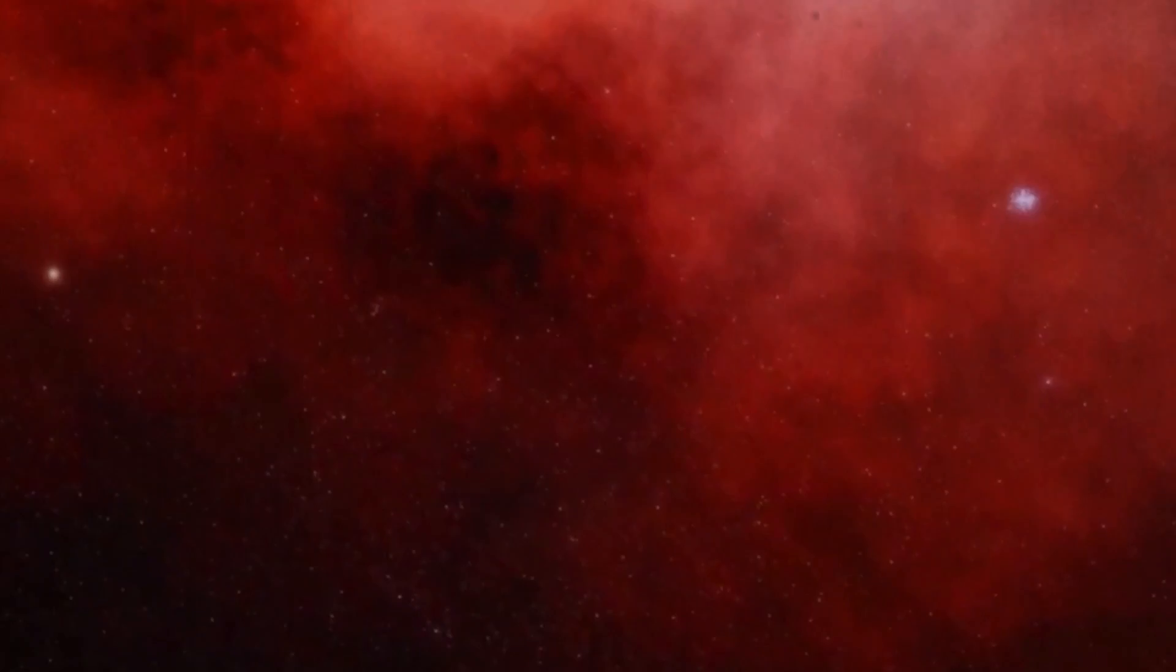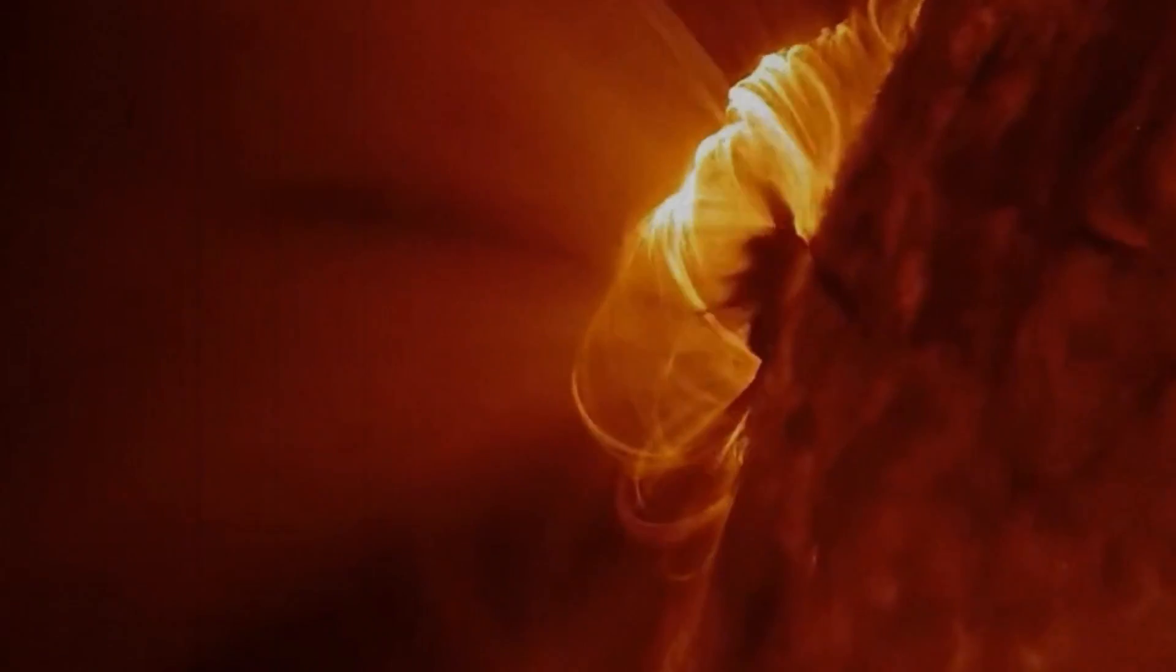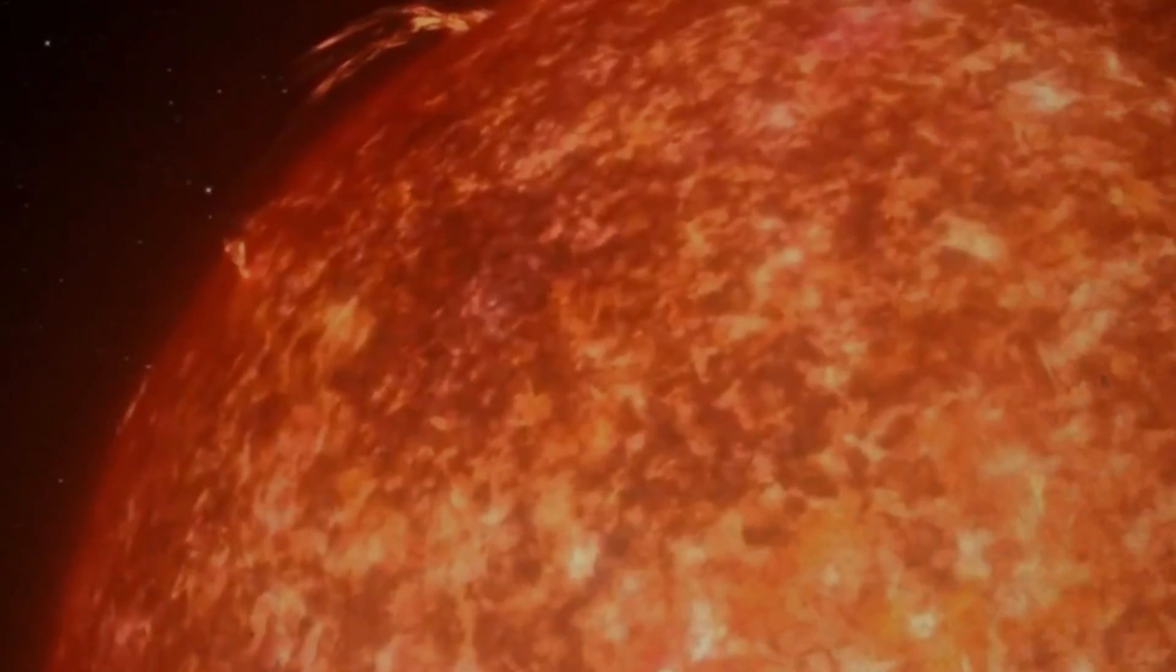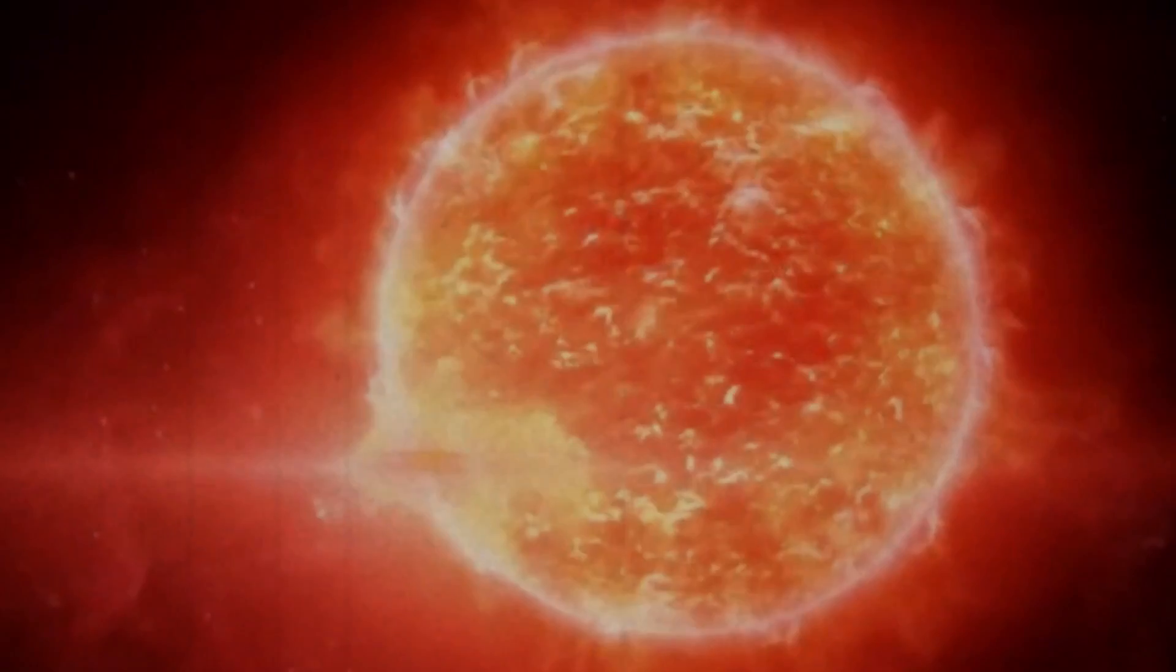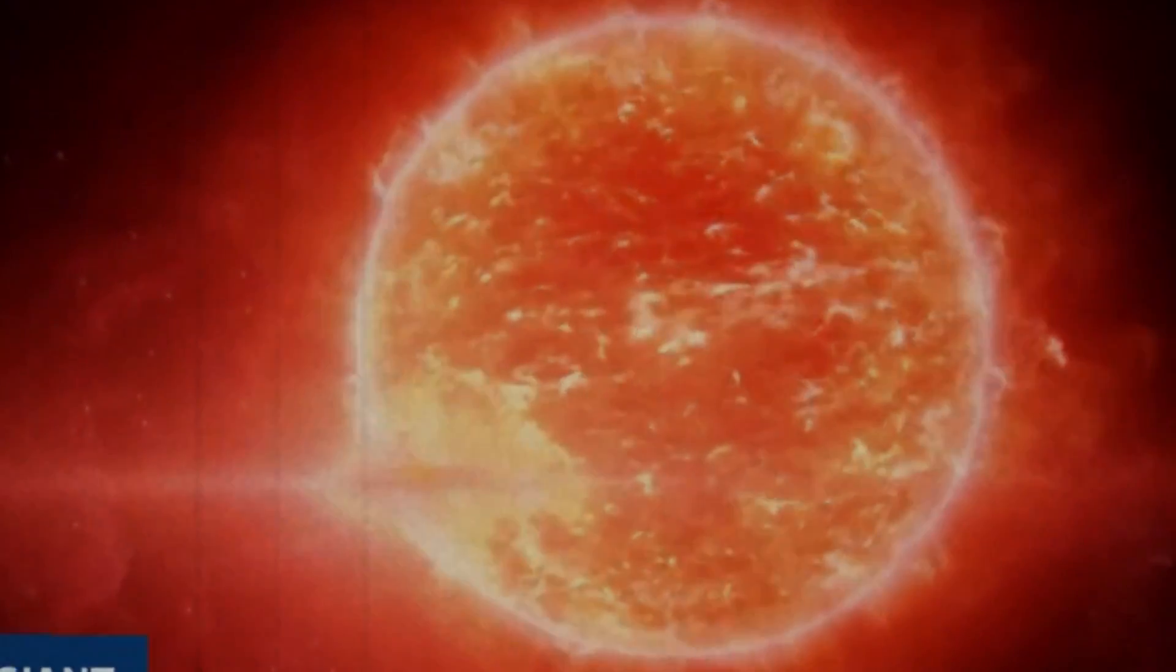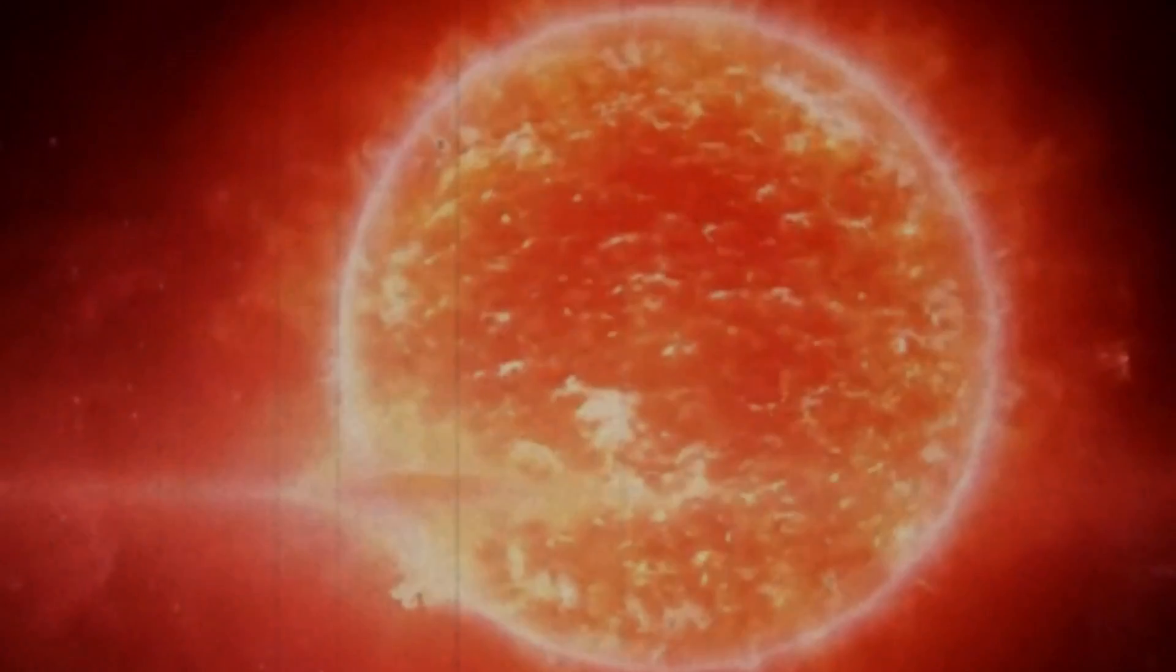When we gaze at the starry expanse, there's a subtle paradox we often overlook. This paradox is tied to the fundamental aspects of time and light in our vast cosmos. Betelgeuse, stars and celestial bodies are so far away that their light takes an immense amount of time to reach our eyes. For instance, despite light traveling at an astonishing 186,282 miles per second, it still has its limitations. Consequently, the light from distant stars and galaxies takes its time to traverse the vastness of space before gracing our sight. When you look at Betelgeuse, you're actually witnessing a spectacle from 650 years in the past.